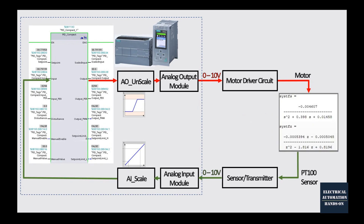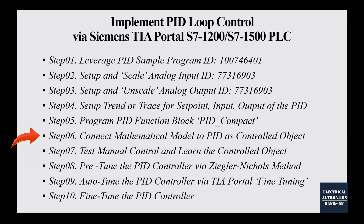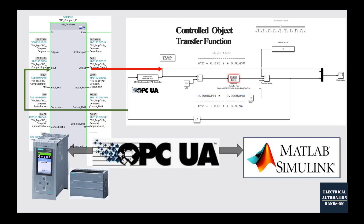Leveraging the process model as a simulated controlled object, we can do pre-commissioning and commissioning in advance, and it can save us tons of time when we go on site. In Step 6, I will use six sub-videos to show how to set up the OPC connection between the PLC and MATLAB Simulink, how to build up the control loops inside MATLAB Simulink, and how to go online and test the PID control loop.